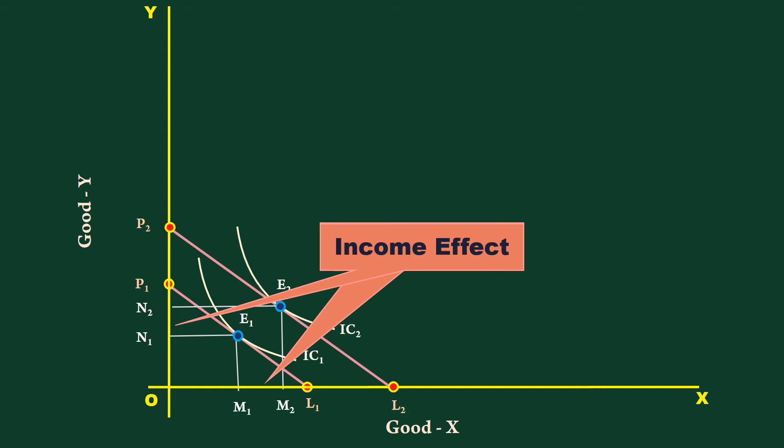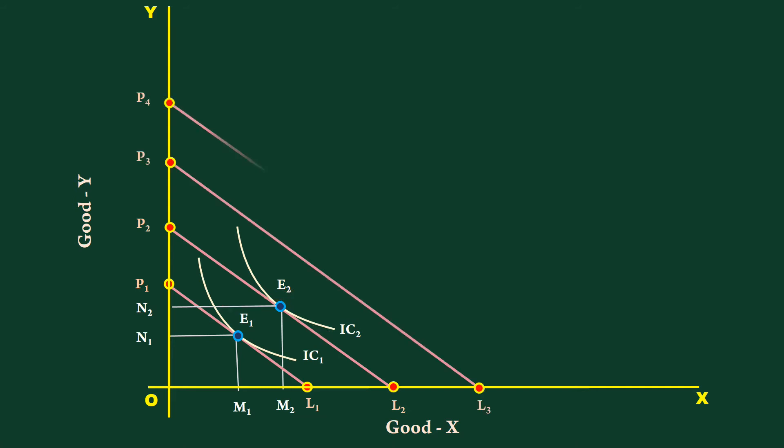With the successive increase in income, the price line moves bodily to right. P3L3, P4L4, P5L5 are such lines. At each income level, the consumer moves to a new equilibrium where corresponding indifference curves are tangent to the price lines. E3, E4, E5 are equilibrium points at different income levels.